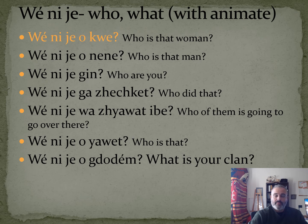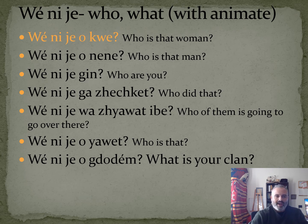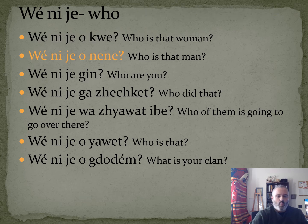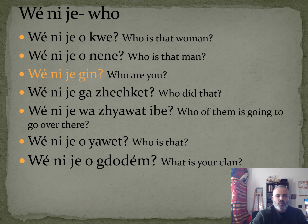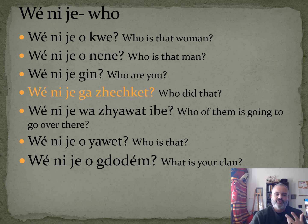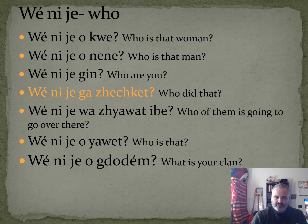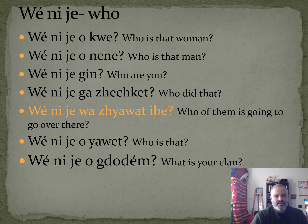Wen nije most of the time means 'who,' except when you're talking about an animate object like a kettle, pot, or car — then it can also mean 'what.' Wen nije okay means 'who is that woman?' Wen nije o nana means 'who is that man?' Wen isha again means 'who are you?' Wen nije guys it scam or wen nije guys it get means 'who did that' or 'who is he or she that did that?'